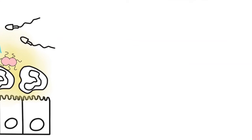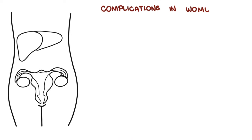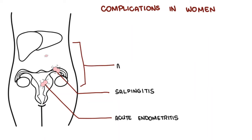When Neisseria gonorrhea causes infection in the urogenital tract in females, they can cause acute endometritis, salpingitis, which is inflammation of the fallopian tubes, and acute pelvic inflammatory disease. These conditions may lead to infertility long term, chronic pelvic pain, and ectopic pregnancy.